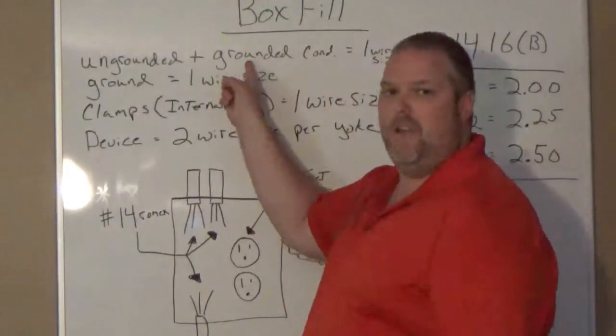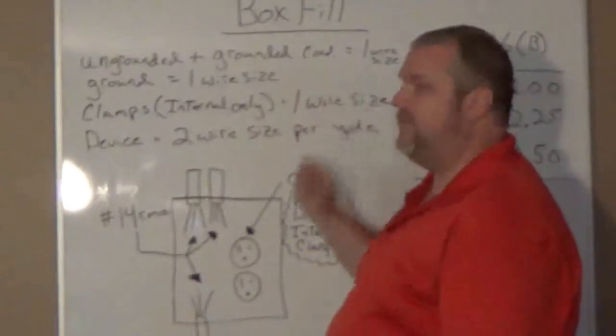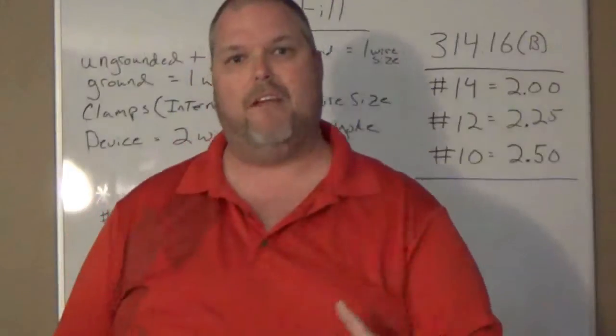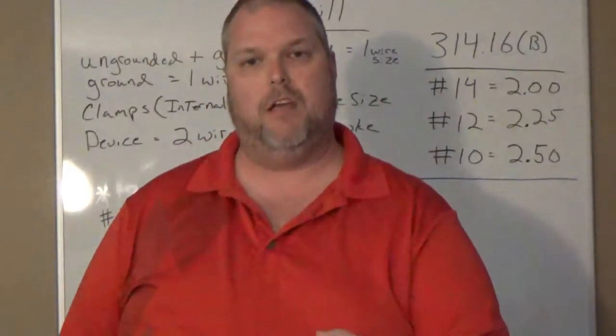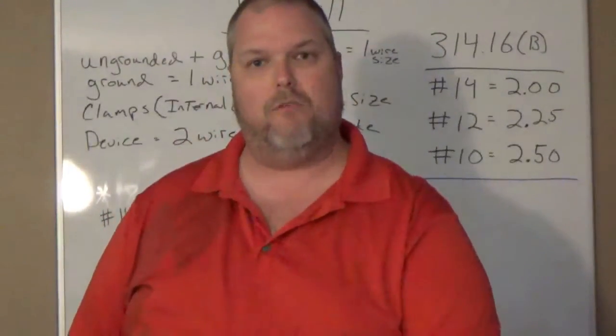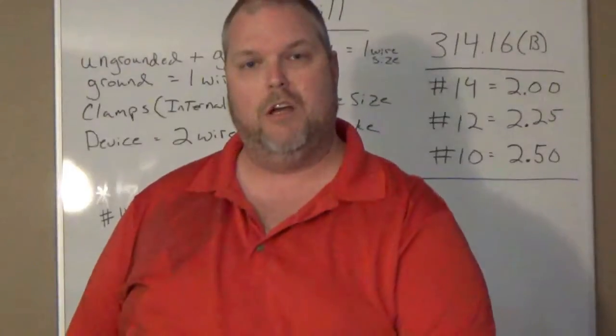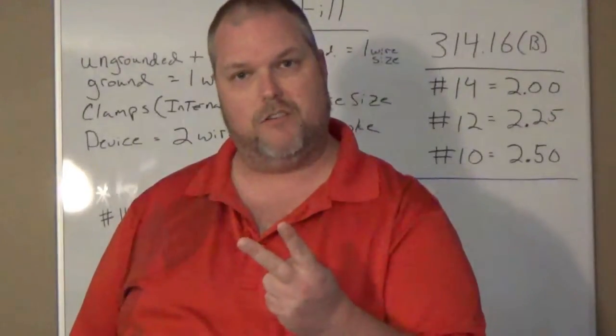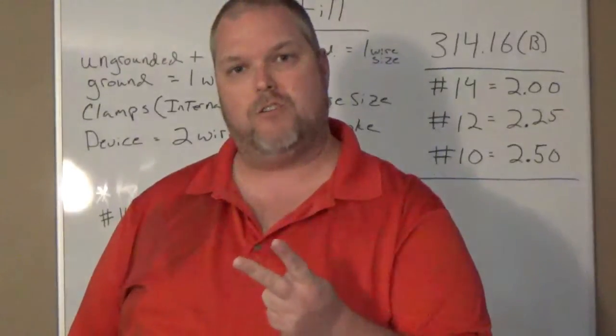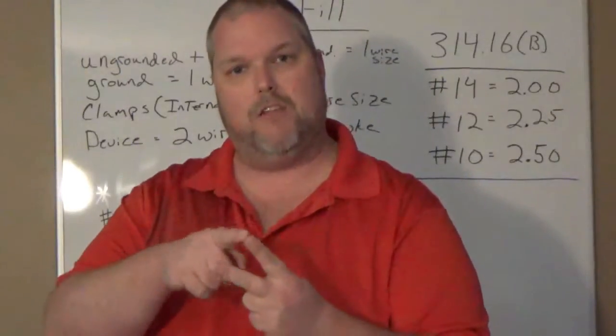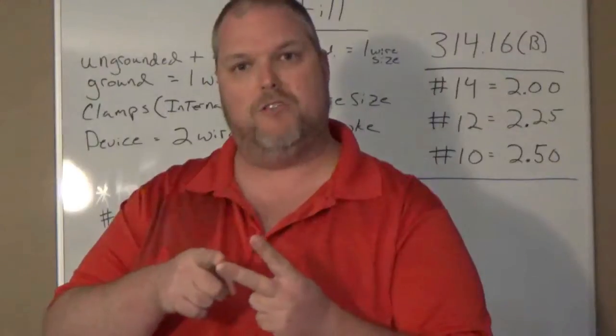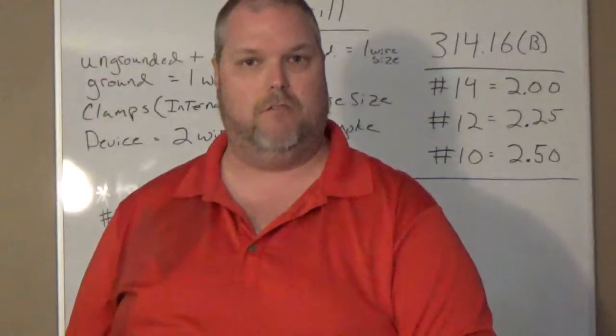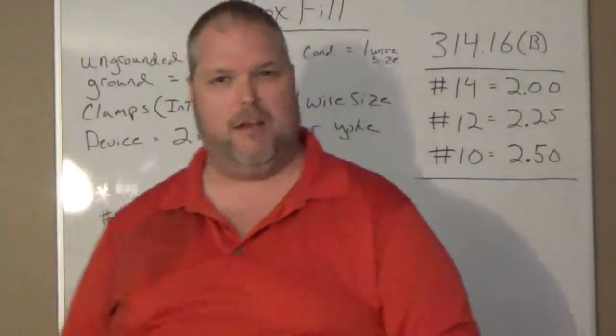Ungrounded conductors and grounded conductors. We count for one wire size. So I'm going to give you this little example. If I have a number 12 conductor, or excuse me, I have a Romex connector. I have two conductors coming in. I have an ungrounded and a grounded conductor. That means I have two conductors. Each conductor, if they're at 12, they're taken at 2.25 and 2.25. So it's actually going to be 4.50. So I hope you guys are following me.